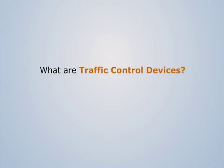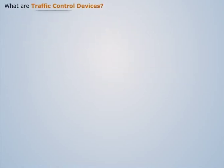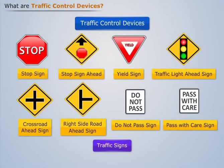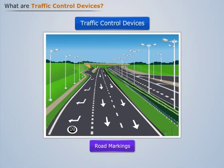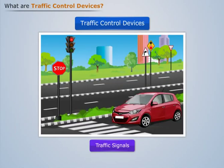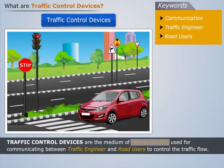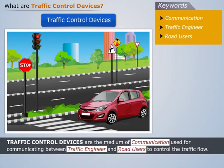What are traffic control devices? We are aware of different signals and traffic control units installed on the roads to control the traffic flow and convey messages to the drivers. The major types of traffic control devices used are traffic signs, road markings, traffic signals, and parking control. Therefore, we can say that traffic control devices are the medium of communication used for communicating between traffic engineers and road users to control the traffic flow.